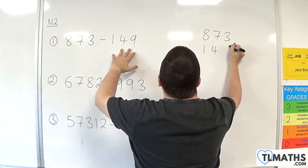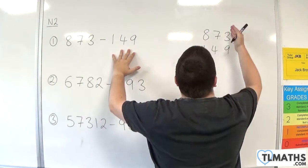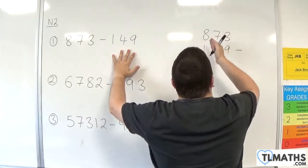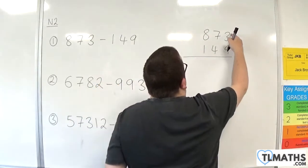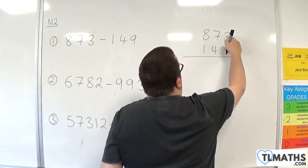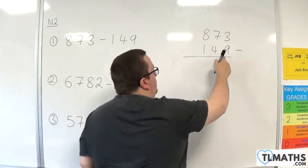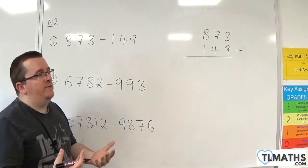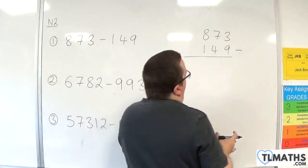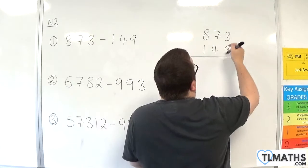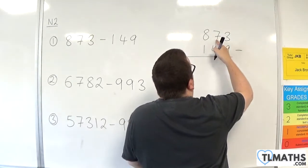The 149 must go at the bottom, and you're lining up the units, tens, and hundreds columns. So we've got 3 take away 9. We can't do that because that's going to go into negative numbers — we don't want that to happen. So 3 take away 9 we can't do, so I'm going to need to borrow 1 from the 7.